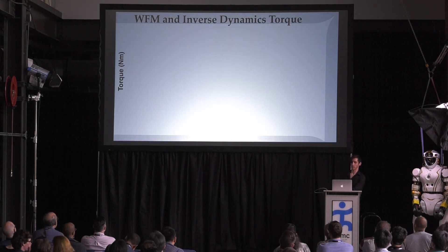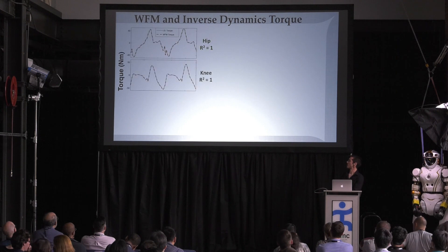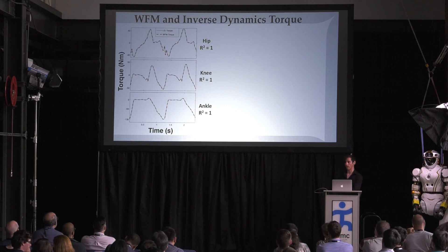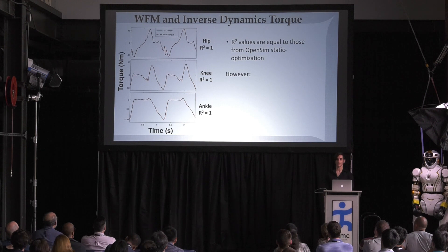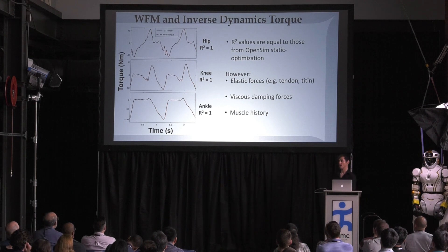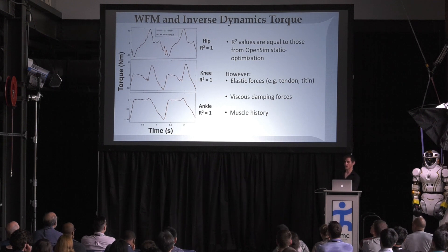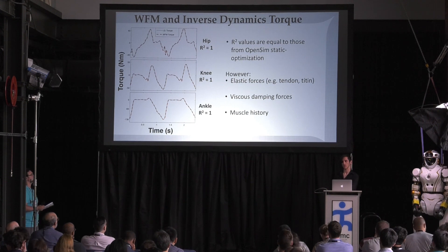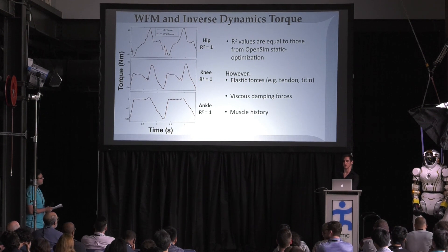For the hip, knee, and ankle, we achieved an R-squared of 1, which is actually not that relevant or important on its own because OpenSim can already do that. But we were able to do so while including muscle properties like elastic forces in tendon, titin damping forces, and muscle history — which is important if you want to do a predictive simulation with your optimized results, because how forces developed in the first place matters if you want to change them, such as adding a torque actuator at the knee.